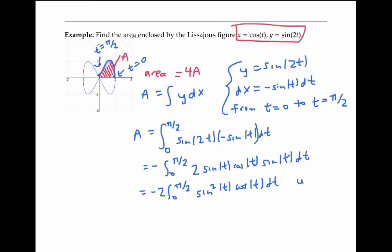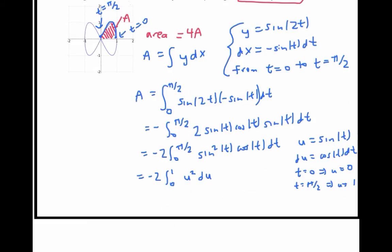And then a u substitution will allow us to compute the integral. We get negative two times the integral from u equals zero to one of u squared du, which integrates to negative two u cubed over three, evaluated between one and zero, which is negative two thirds.